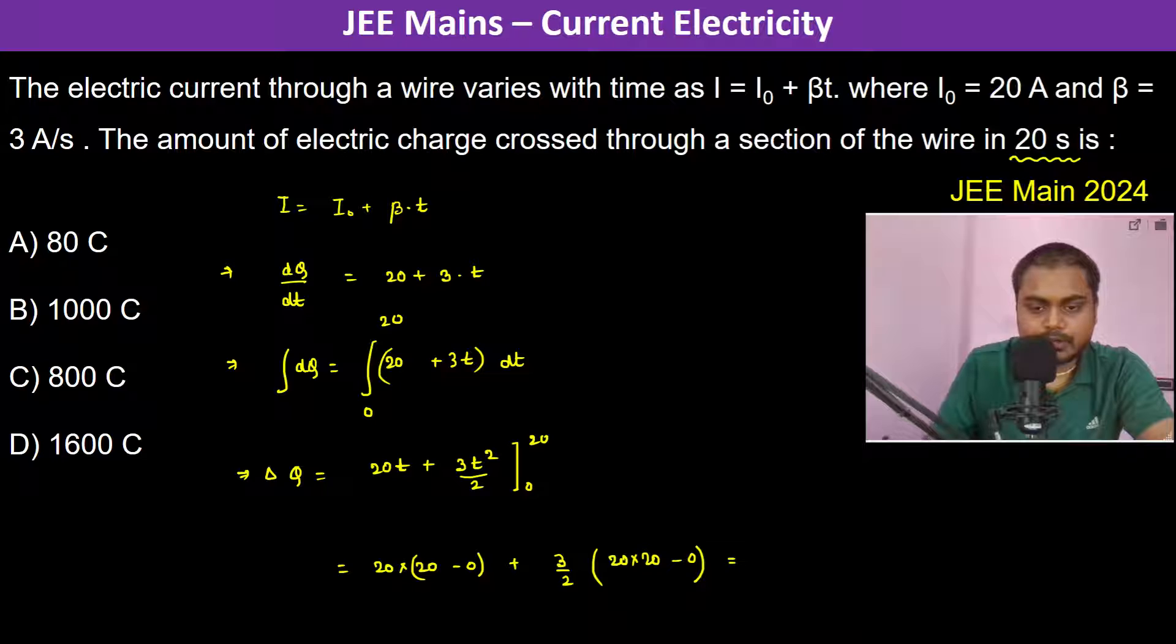This becomes 400, and this is 10, so 200 into 3, that is 600. Therefore it is 1000 coulombs. The answer is going to be D.